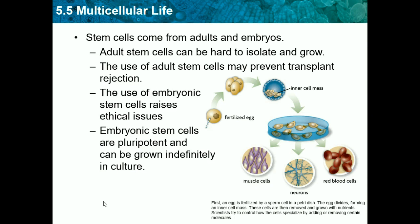First, an egg is fertilized by a sperm cell in a petri dish. The eggs divide, forming an inner cell mass. These cells are then removed and grown within nutrients. Science is trying to control how the cell specializes by adding or removing certain molecules. They basically take these stem cells and grow them in a lab into certain types of cells — like muscle cells, neurons which are brain cells, or red blood cells — to help doctors in certain fields of medicine.